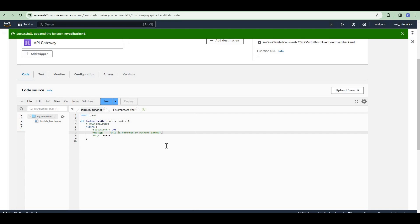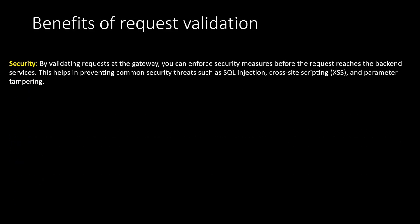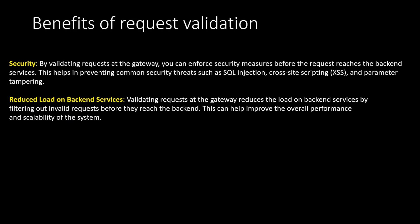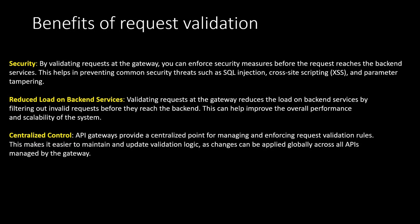Let us now understand the benefits of request validation at the API Gateway level. First is security — by validating requests at the gateway you can enforce security measures before the request reaches the backend service, helping to prevent common threats such as SQL injection, cross-site scripting, and parameter tampering. Second is reduced load on backend services — filtering out invalid requests before they reach the backend improves overall performance and scalability. Third is centralized control — API gateways provide a centralized point for managing and enforcing validation rules, making it easier to maintain and update logic globally across all APIs.